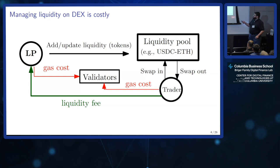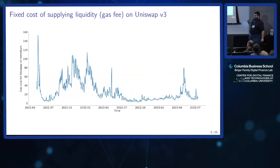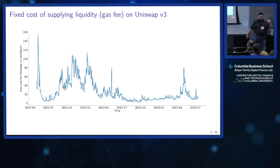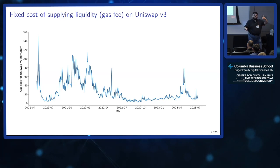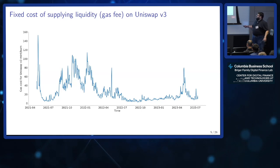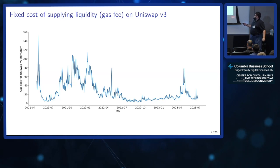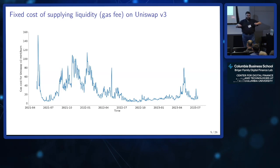Every time liquidity providers need to update, they have to pay that cost. The fixed cost of supplying liquidity — the gas fee for a mint transaction — is quite substantial economically. Here we're plotting over time the average of the cheapest 1,000 mint transactions on Uniswap V3. Costs could easily have exceeded $100 back in the day. Now they're lower, around five or six dollars, but they can spike during big events like the Luna collapse or a stablecoin de-peg.